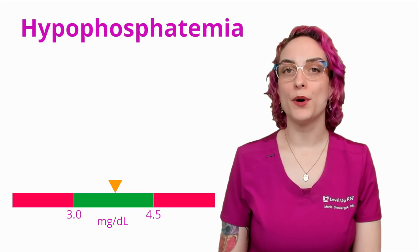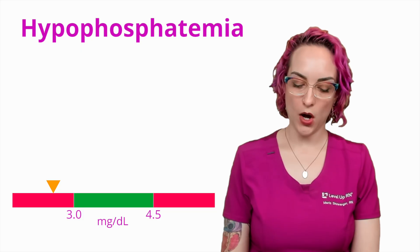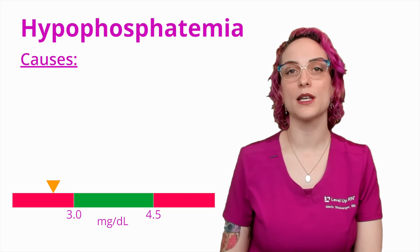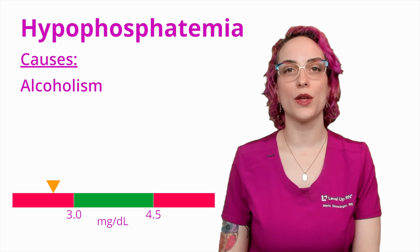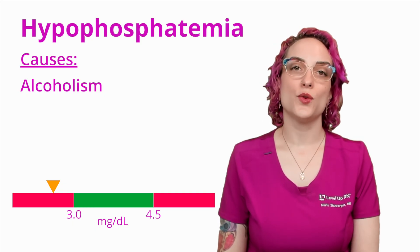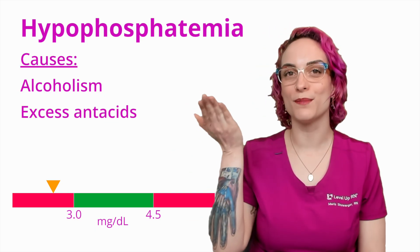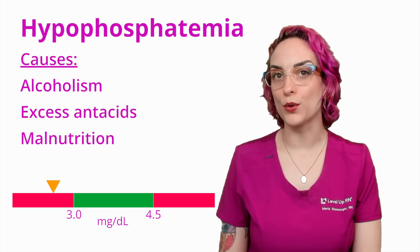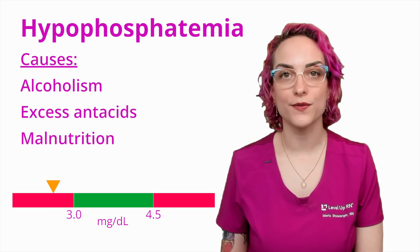Let's talk about hypophosphatemia — a phosphorus level that is below 3.0 milligrams per deciliter. When talking about causes of hypophosphatemia, remember this is related a lot to protein synthesis and metabolism. Patients with alcoholism or alcohol use disorder are going to have a hard time with protein, so I always think of this as being related to hypophosphatemia. We can also see this related to excess antacids, especially those high in calcium such as calcium carbonate — as calcium goes up, phosphorus comes down. And then malnutrition: somebody who is malnourished may not have an appropriate amount of protein and may struggle to create the proteins needed inside the body.